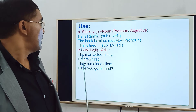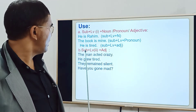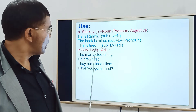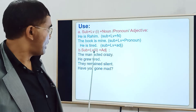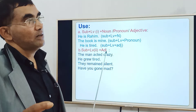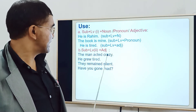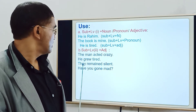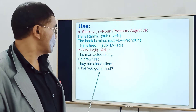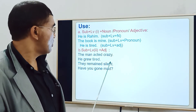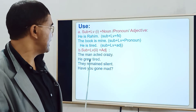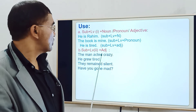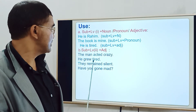Another usage is: Subject + linking verb + adjective. When we use linking verbs from list two, we use an adjectival complement after them. For example: 'the man acted crazy,' 'he grew tired,' 'they remained silent,' 'have you gone mad?' After linking verbs acted, grew, remained, and gone, we have used adjectival complements: crazy, tired, silent, and mad.